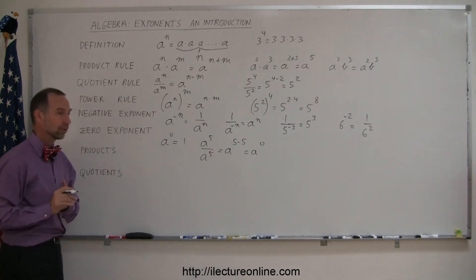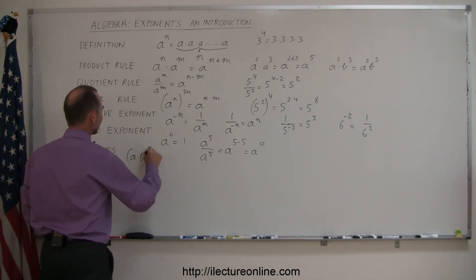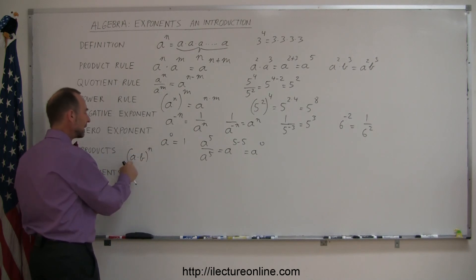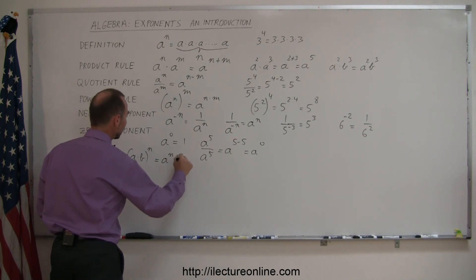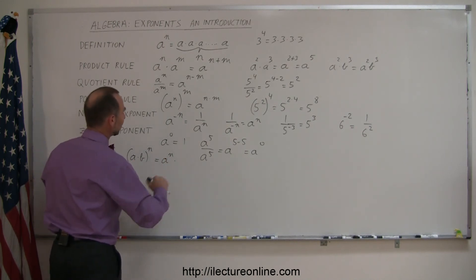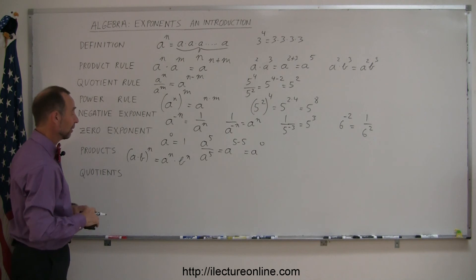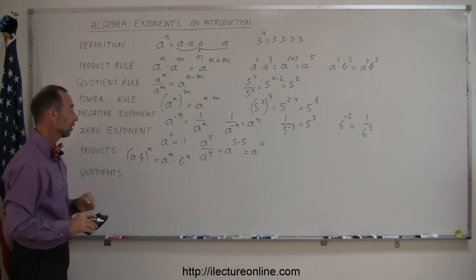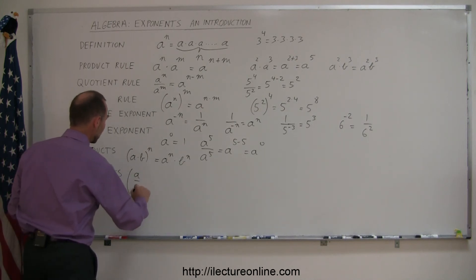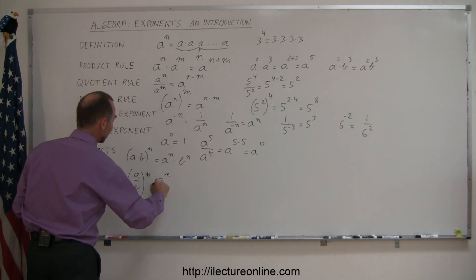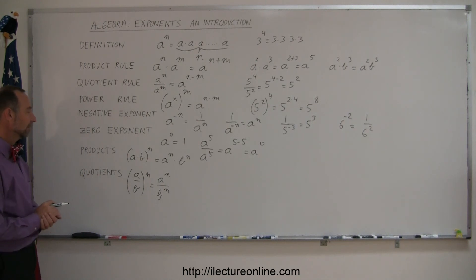Finally, products and quotients with exponents. If we have two numbers multiplied together — for example, a times b raised to the n power — the n distributes itself over each number inside the parentheses. So this equals a to the n times b to the n. Note that you cannot do this when it's a plus: a plus b to the n power is very different. But for multiplication, you simply apply the exponent to each number. The same applies to quotients: if a over b is raised to the n power, that equals a to the n divided by b to the n.